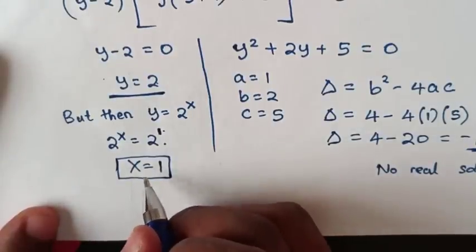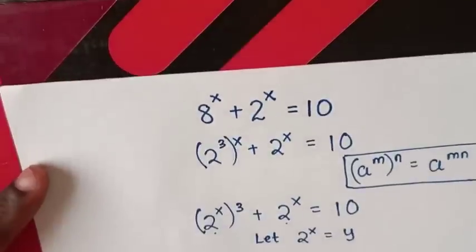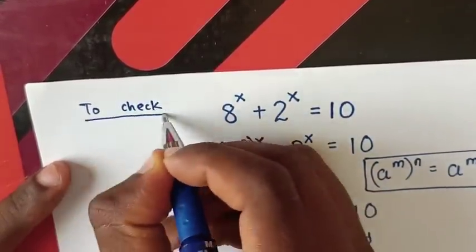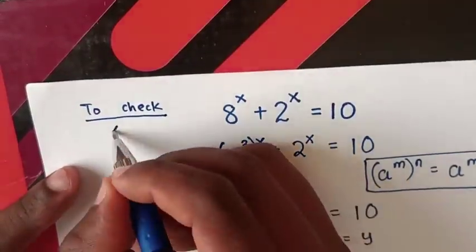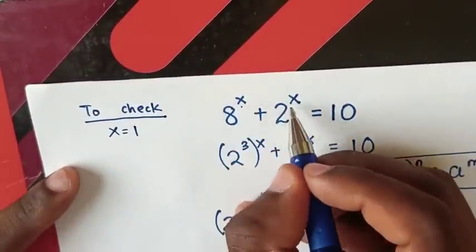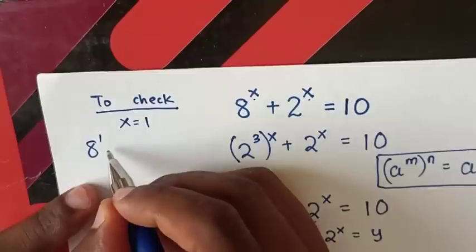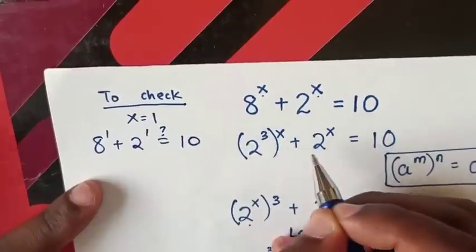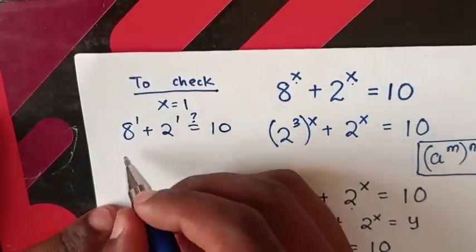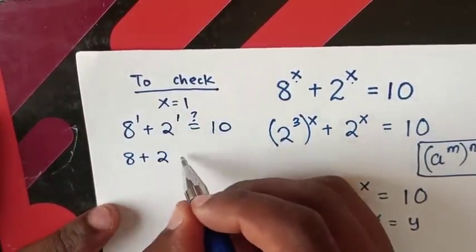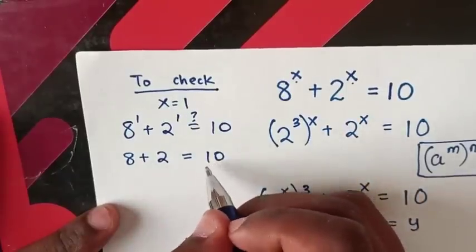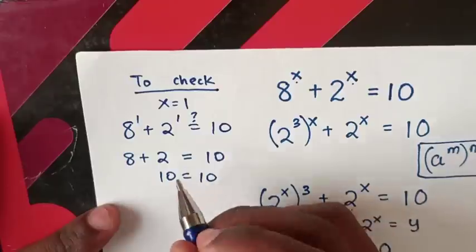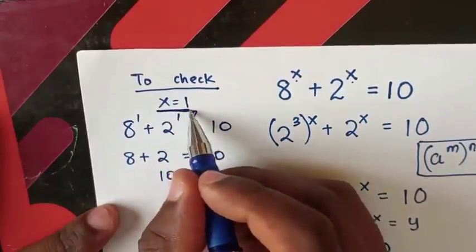To check if x equals 1 is correct, we substitute x equals 1 into the original equation: 8 power 1 plus 2 power 1 equals 10. So 8 plus 2 equals 10, which is 10. Left side and right side are equal, confirming that x equals 1 is correct.